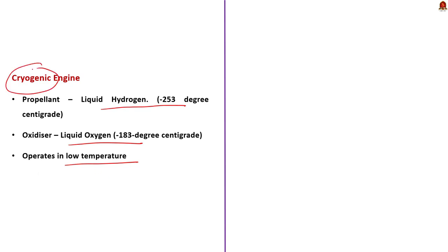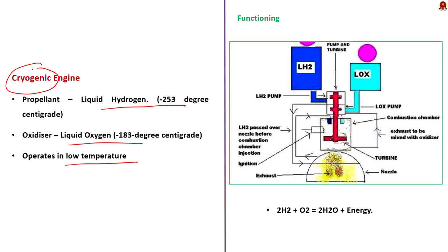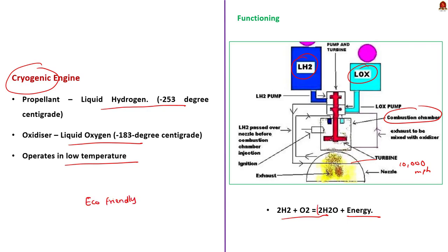Although the operation of the cryogenic engine is very complex, here is a simplified version of its working. Liquid hydrogen is stored in the blue tank and liquid oxygen in the cyan tank. These two mix in the combustion chamber, where hydrogen reacts explosively with oxygen to produce water vapor and energy. The hydrogen-oxygen reaction generates tremendous heat, causing water vapor to expand and exit the engine nozzles at approximately 10,000 miles per hour. This fast-moving steam creates the thrust that propels the rocket, as per Newton's third law. One of the biggest advantages of the cryogenic engine is that it is eco-friendly, as the exhaust is mainly water vapor.